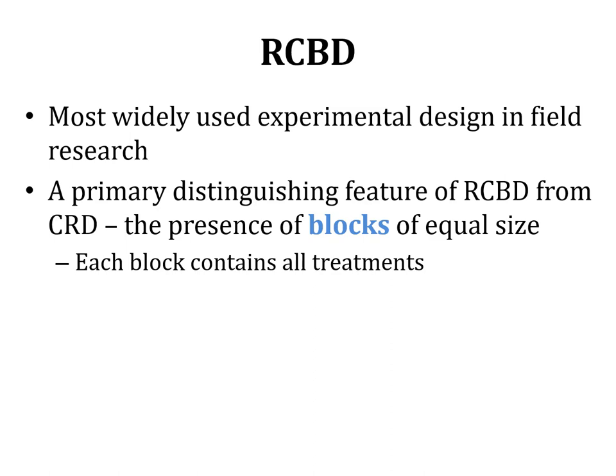In CRD, there is no such blocking — the treatments, wherever they are located in the field or lab, all have equal chances of receiving any kind of treatment. That is possible because the environmental conditions around each experimental unit are the same. But in RCBD, the design is not applied across the whole field at random. Rather, the field is divided into different blocks, and then treatments are applied at random within those blocks. Each block has all the treatments, and those treatments are applied randomly within each block.